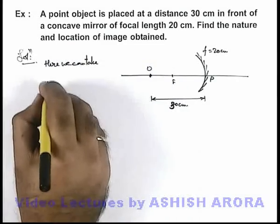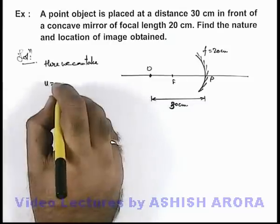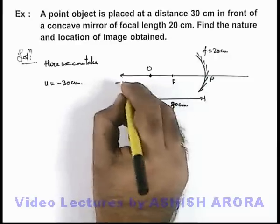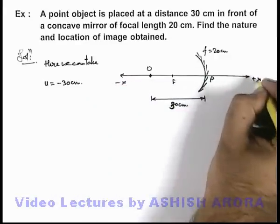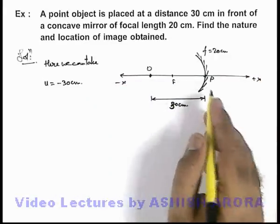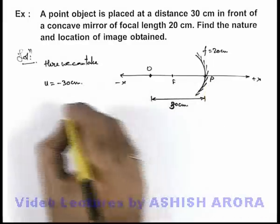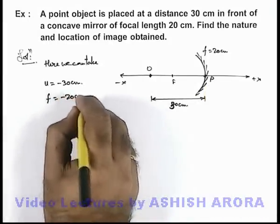The object distance u is equal to minus 30 centimeter, if I am taking this as minus x axis and this as plus x axis and origin at pole of this mirror. Then in this situation, the focal length I can take as minus 20 centimeter.